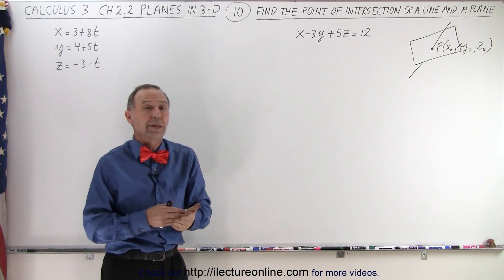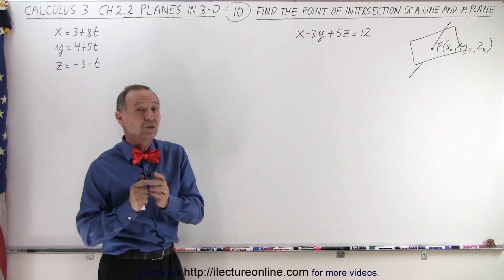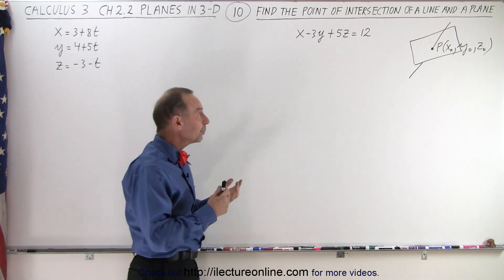So if a line is not parallel to a plane, that means somewhere that line must intersect that plane. Let's go find that point of intersection. How do we do that?